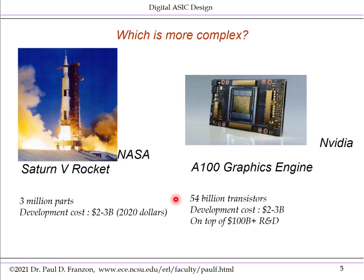The A100 graphics engine has 54 billion transistors — a many order of magnitude increase over the Saturn V rocket — and a development cost in today's money of the same, 2 to 3 billion dollars. But that's just for this particular product, on top of many hundreds of billions of dollars of R&D in semiconductor fabs, fabrication technologies, design technologies, and so forth. Both of these are some of the most complex engineered artifacts designed by mankind.